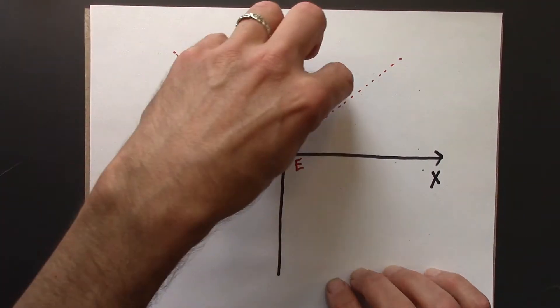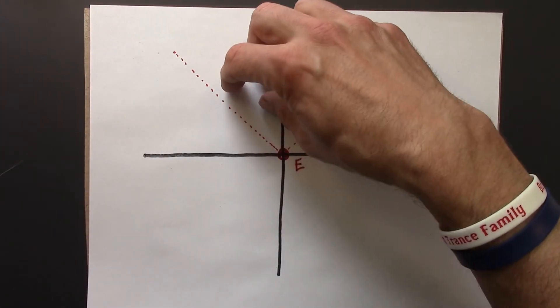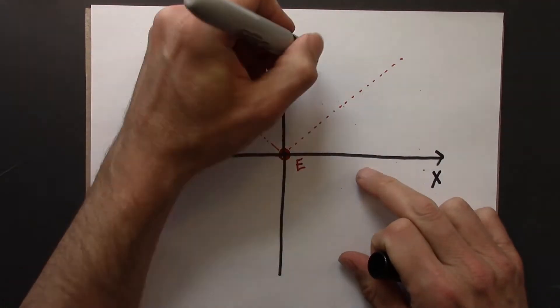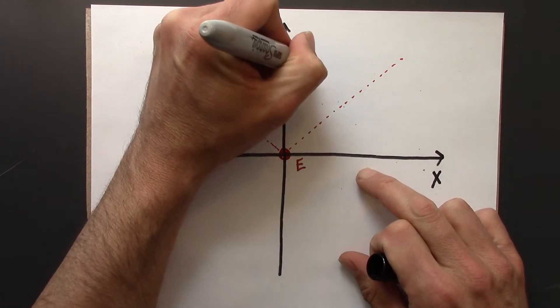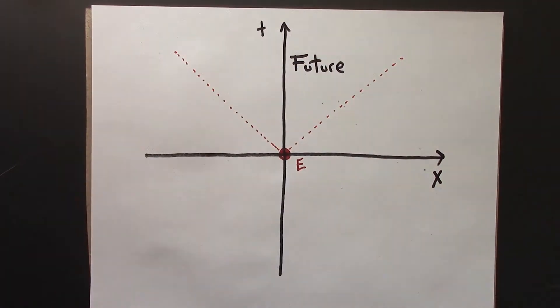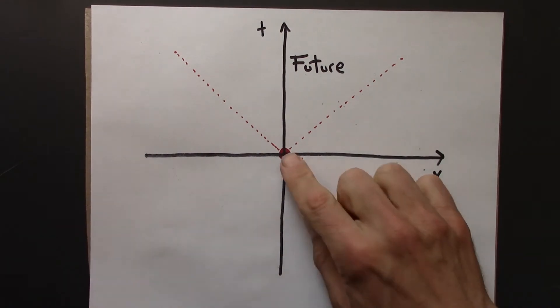So, in relativity, we would say that this belongs to the future of e. And that means that these are all the events that e could cause, that could be causally connected with e.